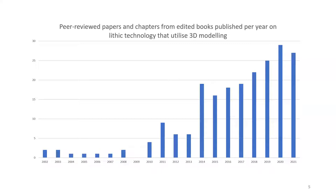The initial dataset includes 180 peer-reviewed papers and 10 chapters from edited books — not including theses or pre-prints, which would increase the numbers significantly. The dataset was produced using academic databases such as Web of Science, Scopus, and Google Scholar to identify papers using keywords. More useful, but significantly more time consuming, was going through the publications of individual authors who had at least one 3D modelling stone artefact paper. Even though I've almost certainly missed some papers, I'm reasonably confident this dataset represents the bulk of the extant literature.